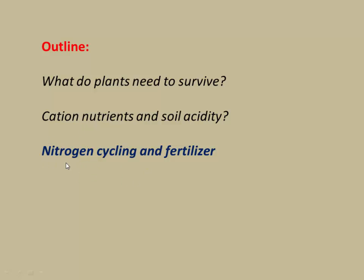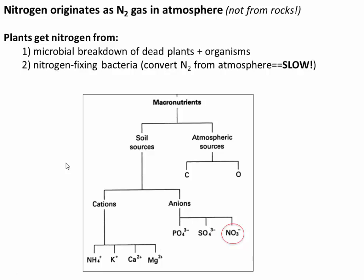Let's look at another critical nutrient: nitrogen. Nitrogen is probably the most critical plant nutrient, and it's interesting because although most nutrients come from the weathering of rocks, nitrogen comes from the atmosphere where it's held as N2 gas. For plants to get this, the N2 gas must first be fixed by nitrogen-fixing bacteria in the soil, which convert nitrogen gas into nitrite or nitrate. This is a super slow process, so it's hard to get nitrogen out of the air and into soil.